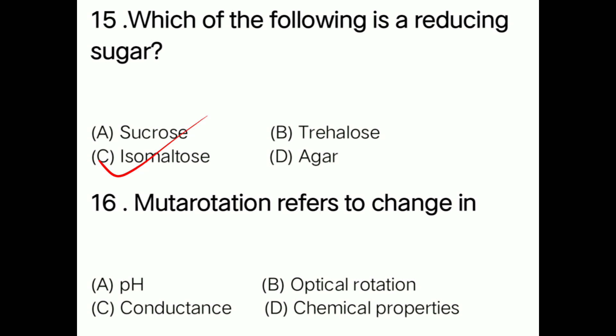Question: Mutarotation refers to change in option A pH, option B optical rotation, option C conductance, option D chemical properties. Correct answer is option B: mutarotation refers to change in optical rotation. This is the definition of mutarotation.